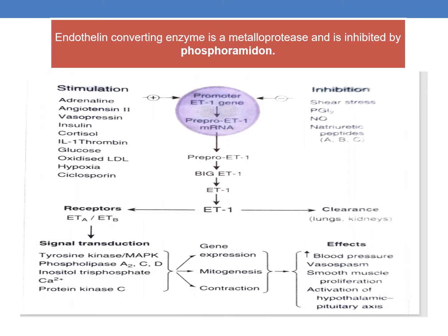ET1 is mainly produced from pre-pro ET1, which is a 212 amino acid residue, and this is processed to Big ET1. Big ET1 is converted to endothelin 1 in the presence of the enzyme endothelin converting enzyme, which is a metalloprotease and is inhibited by phosphoramidon. ET1 rapidly acts on its two receptors, ETA and ETB, and is rapidly cleared from lungs and kidneys.